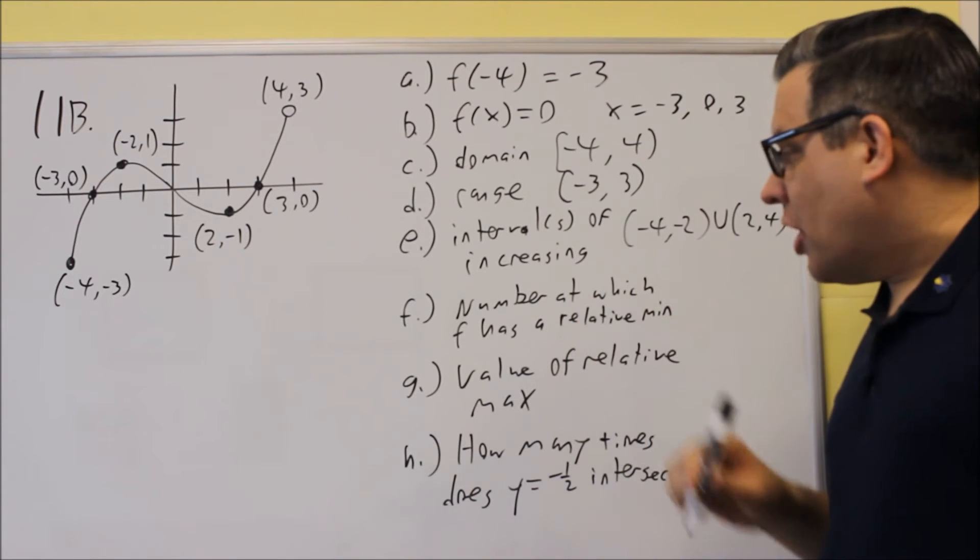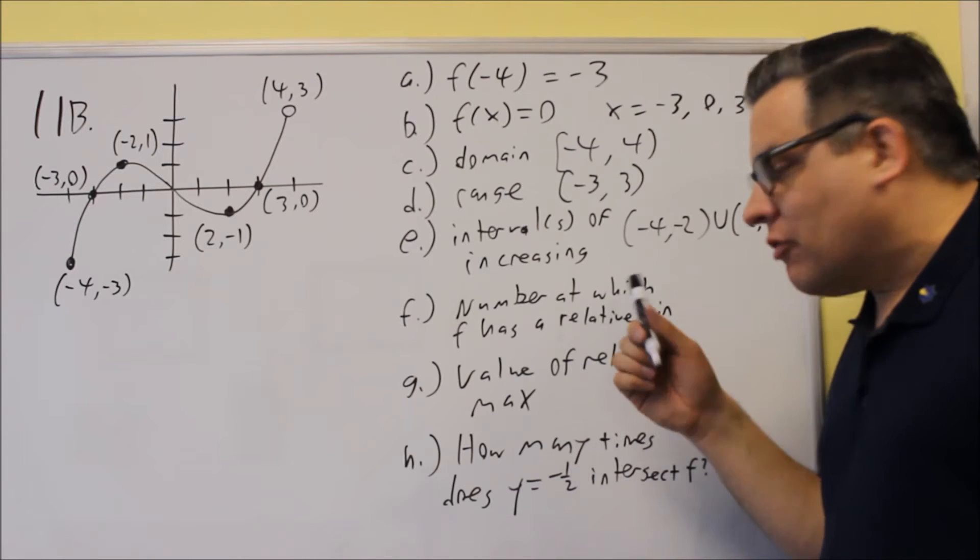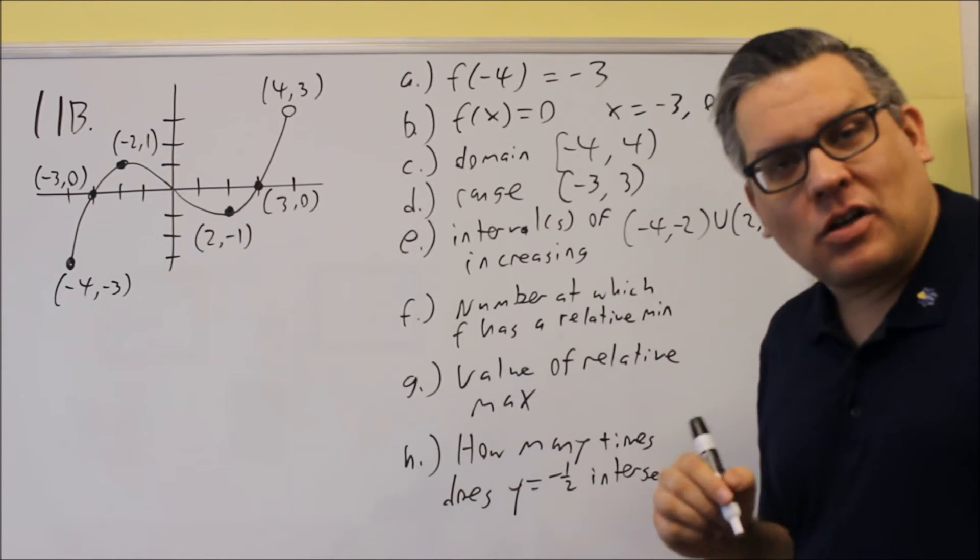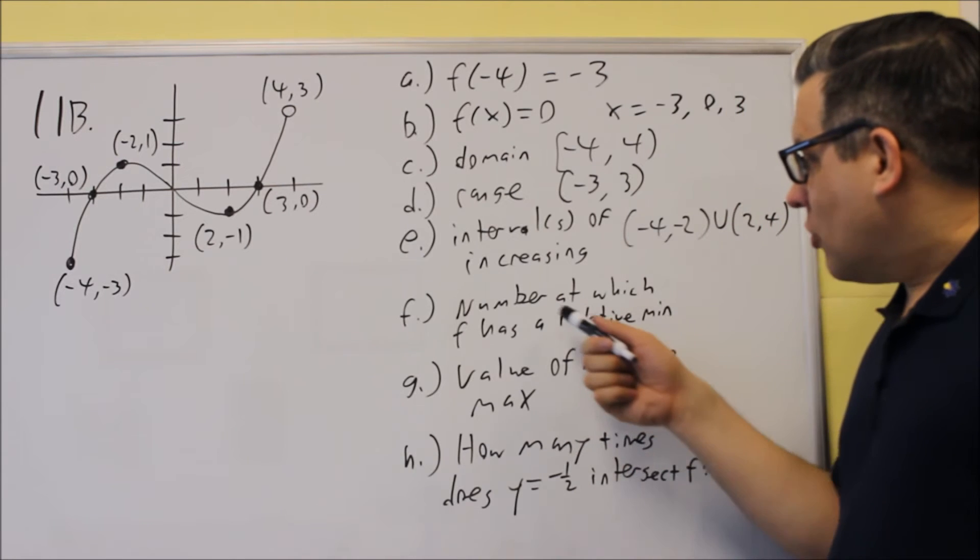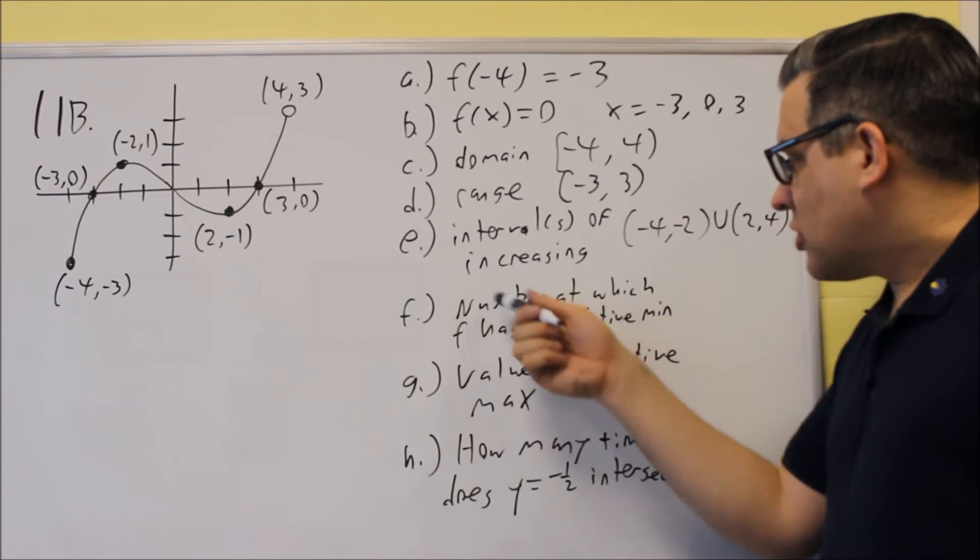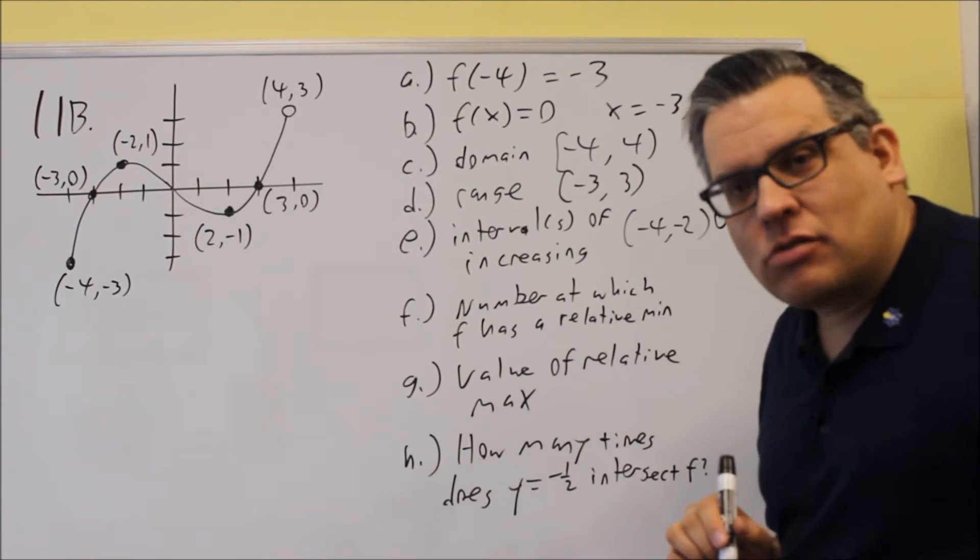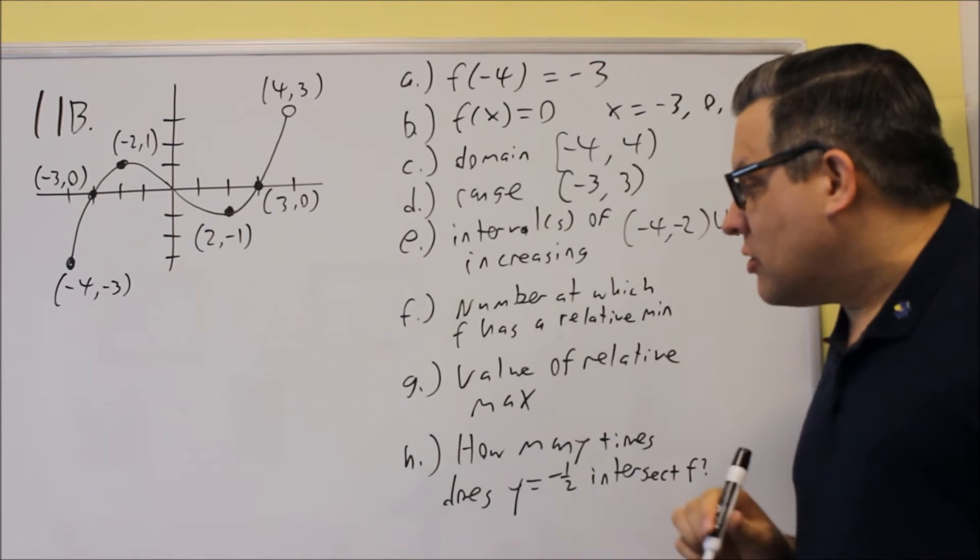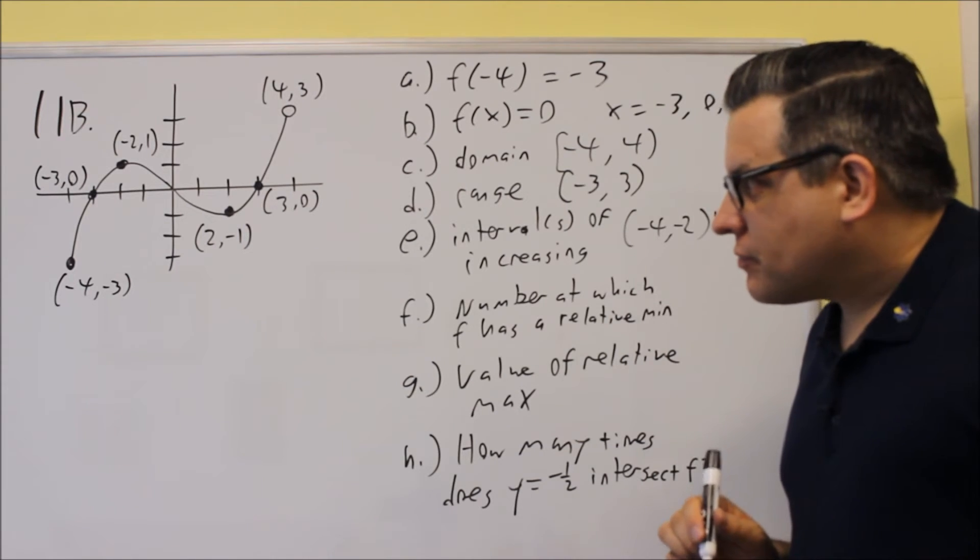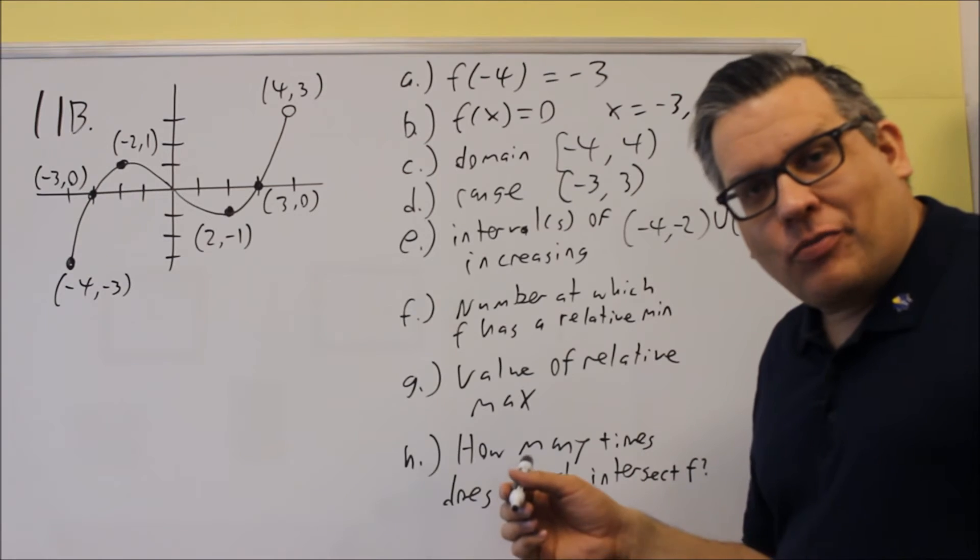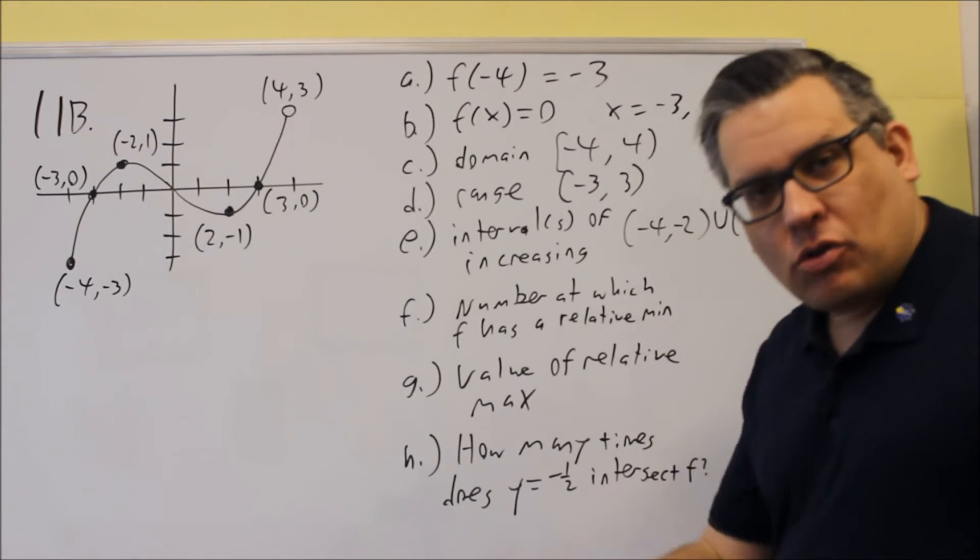For f, the number at which f has a relative min. If you see the word relative or local on the test, they mean exactly the same thing. So a number at which f has a... So remember this part, if you see the phrase 'number at which,' it's asking for x value, so it's asking for the x value at which there is a relative min. Now, I'm not going to put -4. So relative means it's not the absolute lowest min.